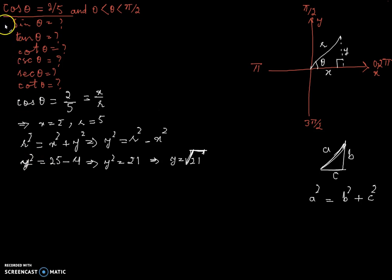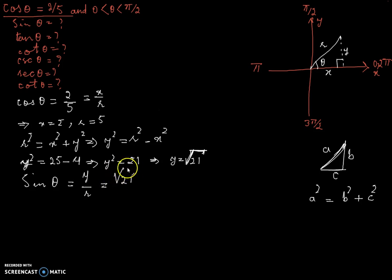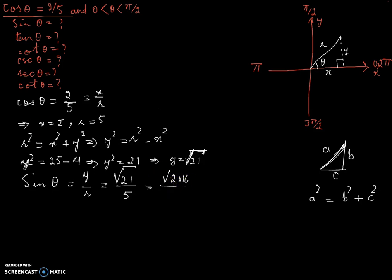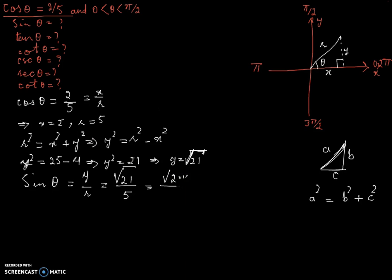Now you have y, x, and r, so you can calculate all the trigonometric values. Let's start with sine θ: sine θ equals y divided by r, which is √21 divided by 5. You cannot simplify this any further, so sine θ = √21 / 5.